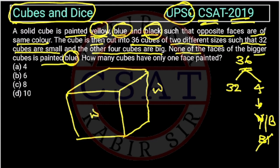So how many cubes have only one face painted? We have to find how many cubes have one face painted, and here we cannot use the formula directly. If we cut the cube into two parts on each axis, we will get 8 cubes, but we are getting 36.